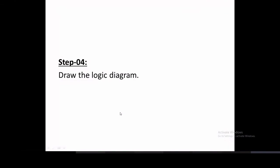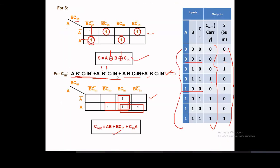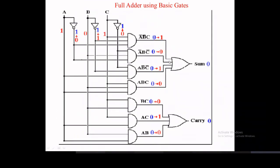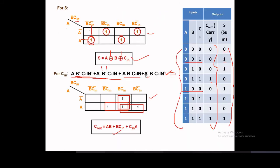Step four: draw the logic diagram. Based on the sum equation, the first term is A·B-bar·C-bar, implemented using a three-input AND gate with A direct, B through a NOT gate giving B-bar, and C through a NOT gate giving C-bar. The second term A-bar·B-bar·C uses A-bar, B-bar, and C as inputs to another three-input AND gate.